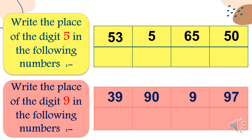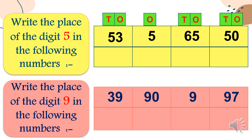Write the place of the digit five in the following numbers. We put our places first: ones and tens. We have number five only — number five is in the ones place. Then we have fifty-three: number five is in the tens place. We have just five — five is in ones. Sixty-five: five is in ones. Fifty: five is in tens.